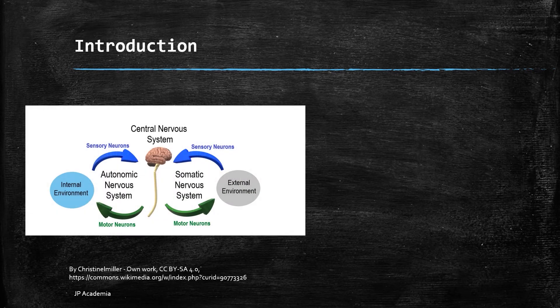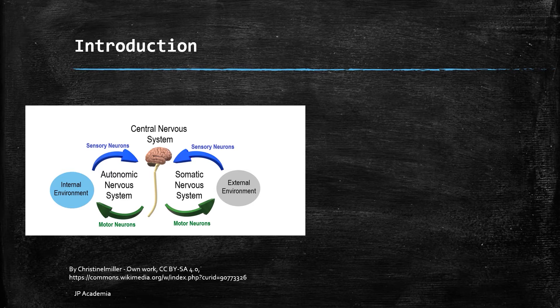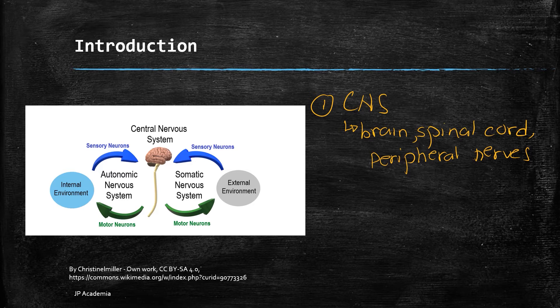The nervous system can be classified into two parts. First, we have the central nervous system as shown here in the figure that controls the voluntary functions. And second, we have the autonomic nervous system that controls the involuntary body functions. CNS or the central nervous system includes the brain, spinal cord, and the peripheral nerves.